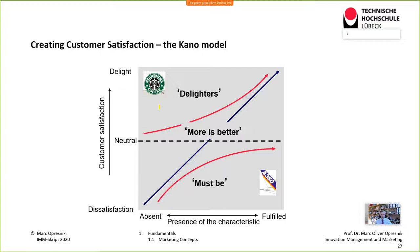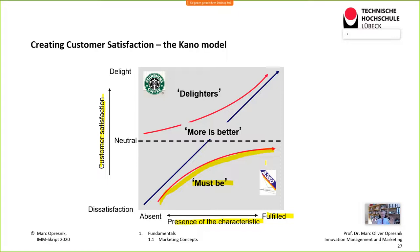Another important concept is the Kano model — a strategic management tool that explains how customer satisfaction is created. There are three factors. The first dimension is 'must-be factors.' If must-be factors are met or even over-fulfilled, no big customer delight is created — people are just neutral about that.